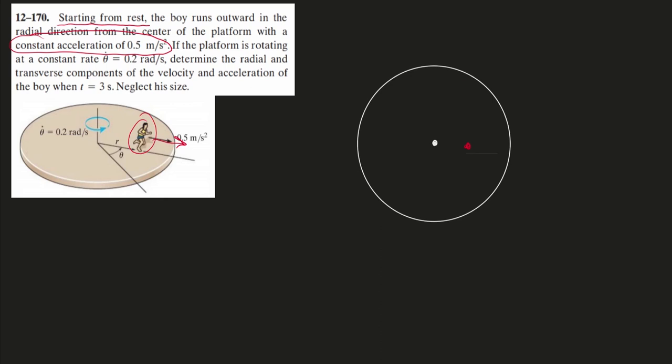This acceleration is him giving himself more distance away from the starting point. This acceleration is in the outwards direction. Because of this acceleration, his r is always increasing. So this 0.5 here is really the acceleration of the r position of this boy.